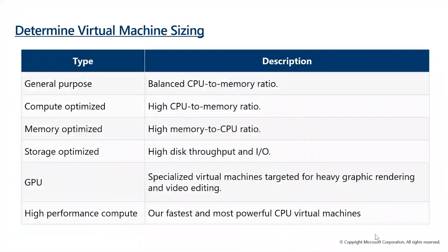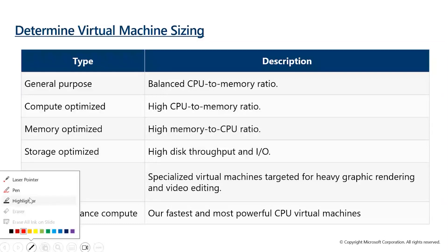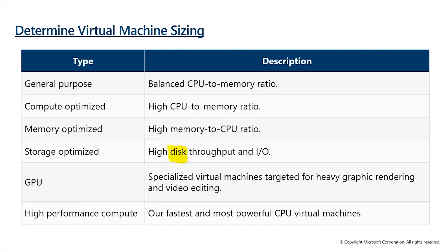To summarize VM sizes: general purpose has balanced CPU and memory; compute optimized has high CPU compared to memory; memory optimized has high memory compared to CPU; storage optimized has high disk throughput. Storage optimized refers to Azure Disk Storage — premium SSD, standard SSD — which provides high disk capacity and throughput.